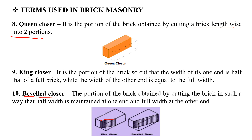Beveled closer is the portion of a brick obtained by cutting the brick in such a way that half width is maintained at one end and the full width at the other end. We mark the header and center portion and the structure of the end point, cut that portion, and the other portion is the beveled closer.